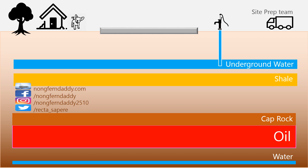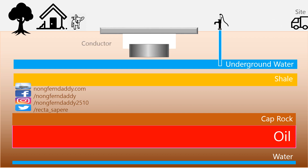Before they leave the location, they dig a conductor hole and put a conductor pipe in. The hole is usually about one and a half to three meters deep, depending on location and well type to be drilled. The conductor is usually 36 inches and three to four meters long. It provides guidance for the first section to be drilled by the rig.